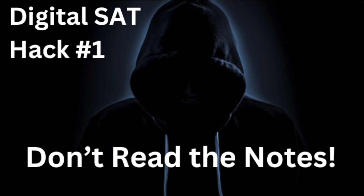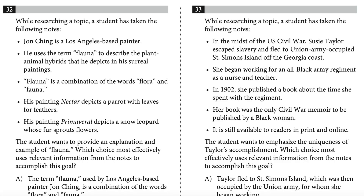Digital SAT Hack Number One: Don't read the notes. The first Digital SAT hack I want to share with you is to ignore the bullet points on the notes questions at the end of the reading and writing modules — the question type where they give you a bunch of bullet points and you've got to answer a question based on the notes. The funny thing about these questions is that 98% of the time, you can just ignore the notes completely.